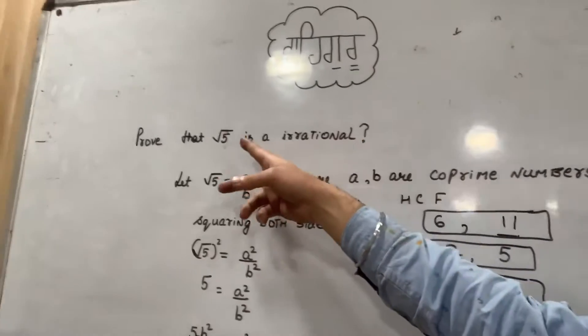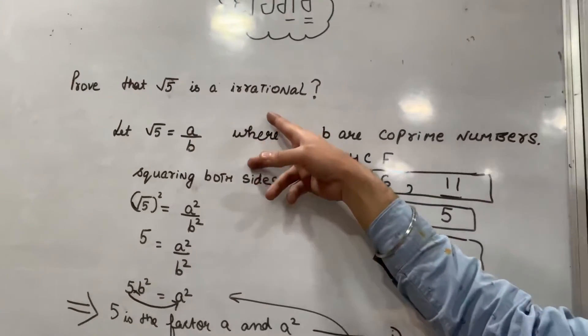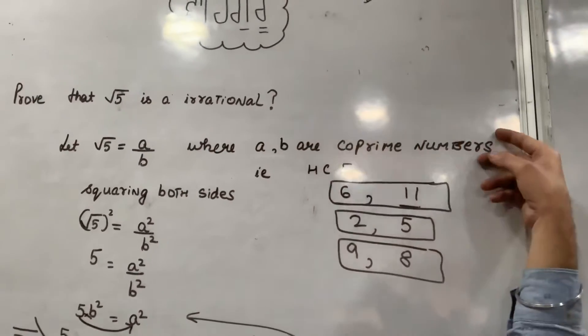Let root 5 is equal to a upon b, where a and b are coprime numbers.